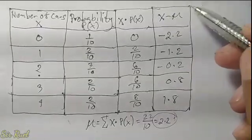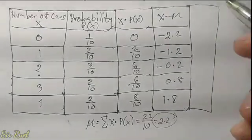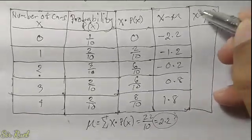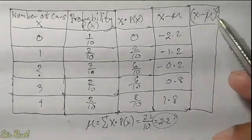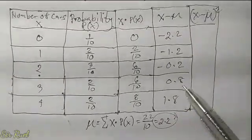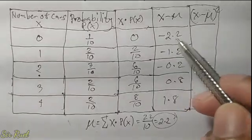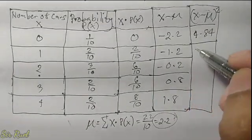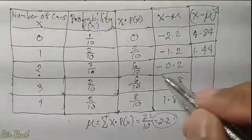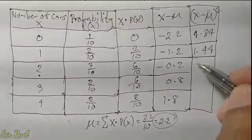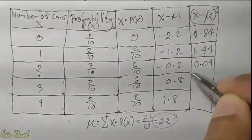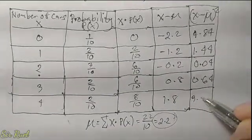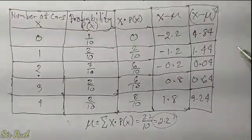The next step is to square the values in that column. Our label will be x minus mean, squared. We multiply each value by itself: negative 2.2 times negative 2.2 is 4.84; negative 1.2 times negative 1.2 is 1.44; negative 0.2 times negative 0.2 is 0.04; 0.8 times 0.8 is 0.64; and 1.8 times 1.8 is 3.24.